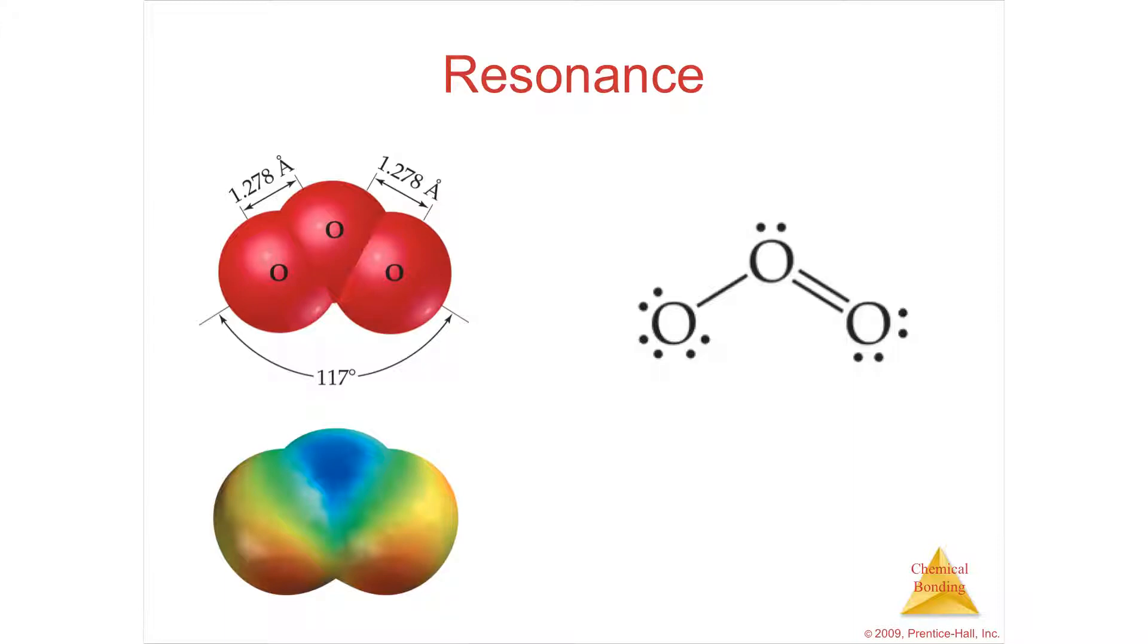If you draw the Lewis structures of ozone so that everything has six electrons in its outer shell but needs an octet, the only way you can draw it is with a single bond on one oxygen and a double bond on the other. This would meet the Lewis structures and the octet rule. Everything's fine.